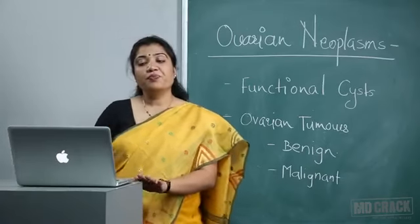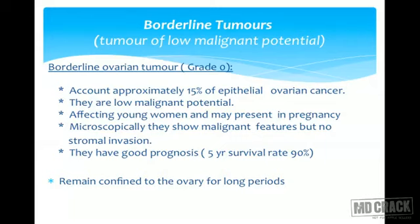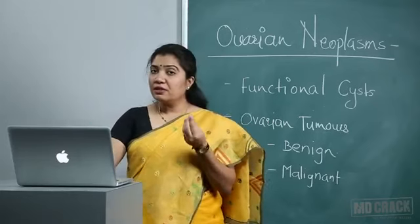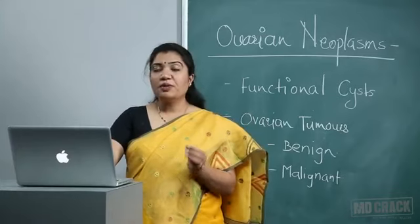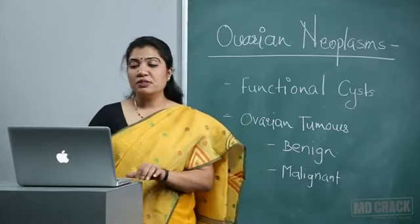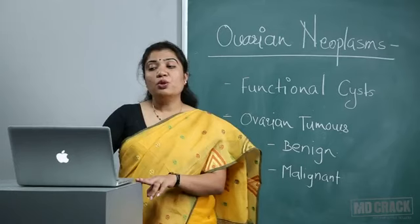Borderline ovarian tumor is grade zero histologically; it accounts for about 15% of epithelial ovarian cancers and has very low malignant potential. They affect young women and may present during pregnancy. Microscopically they show malignant features — like abnormal nuclei and mitotic figures — but there is no stromal invasion. This is an important MCQ point. They have very good prognosis: five-year survival is almost 90% and they remain confined to the ovary for a long time.